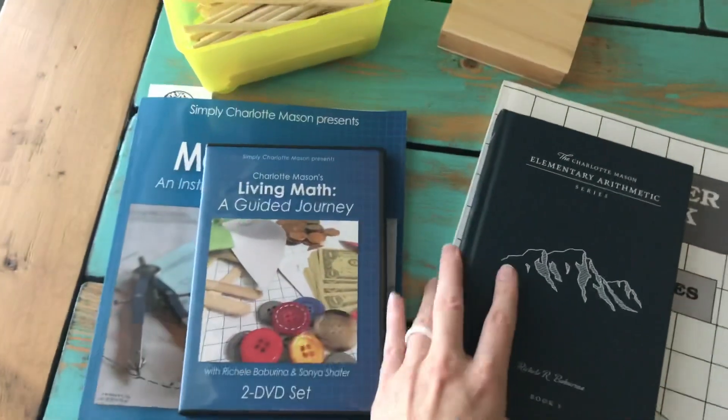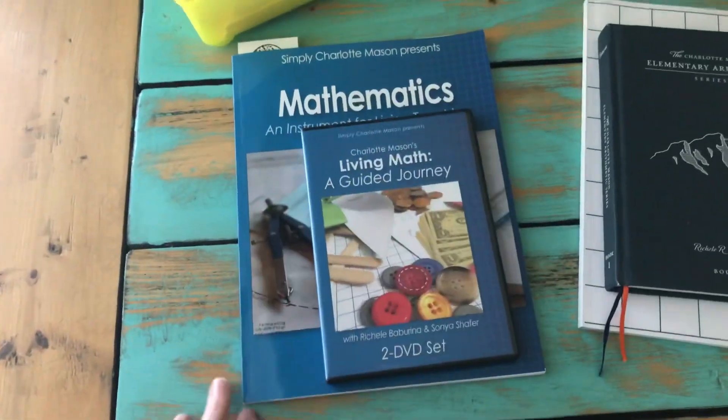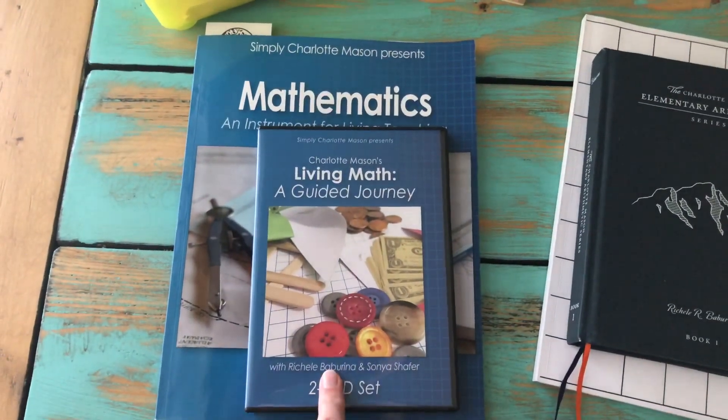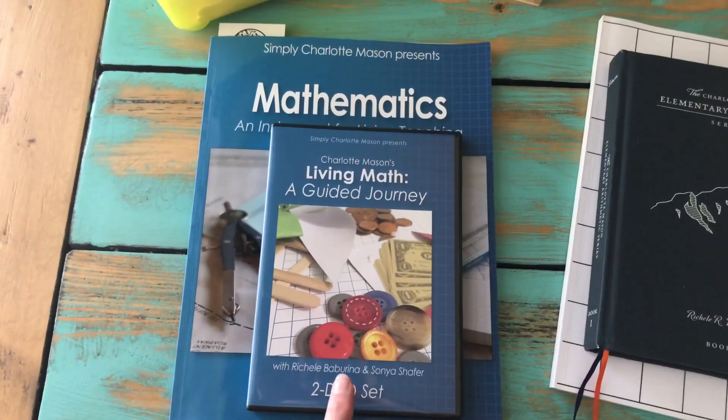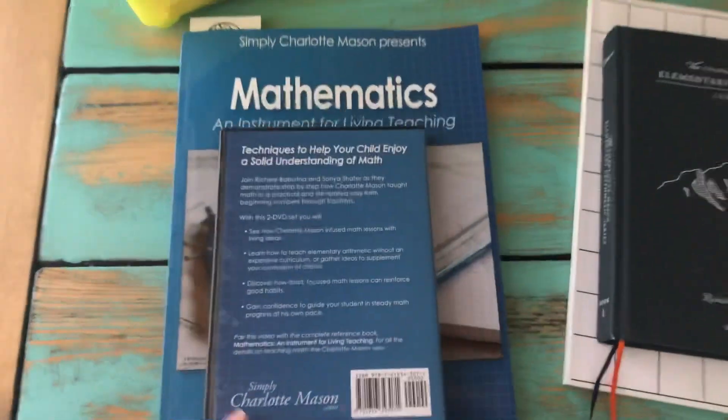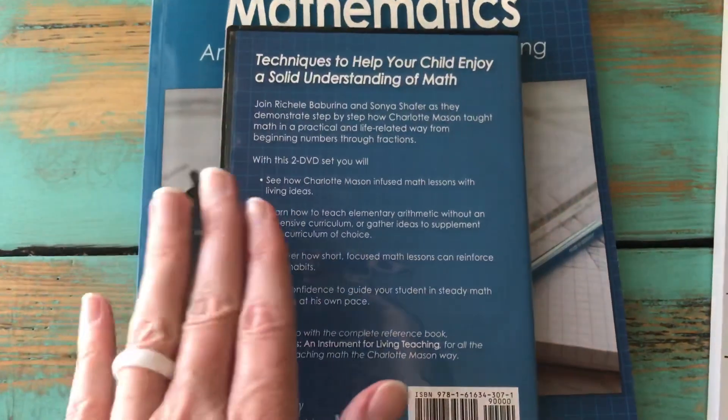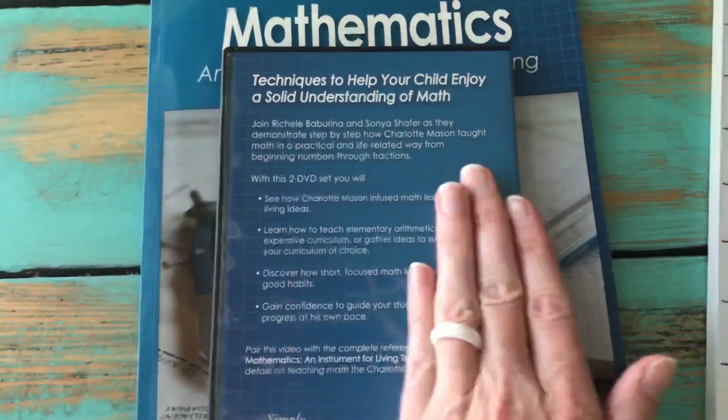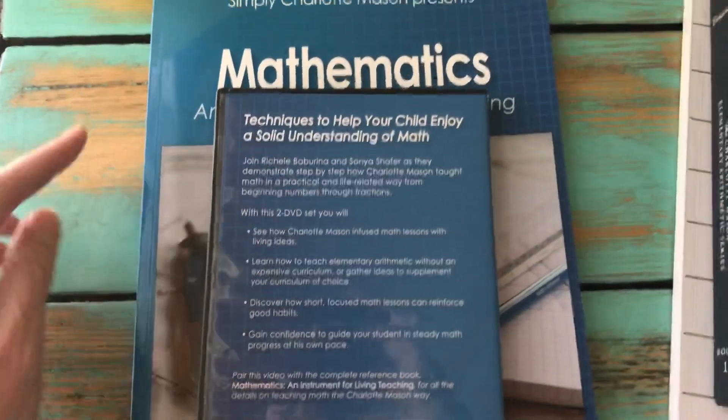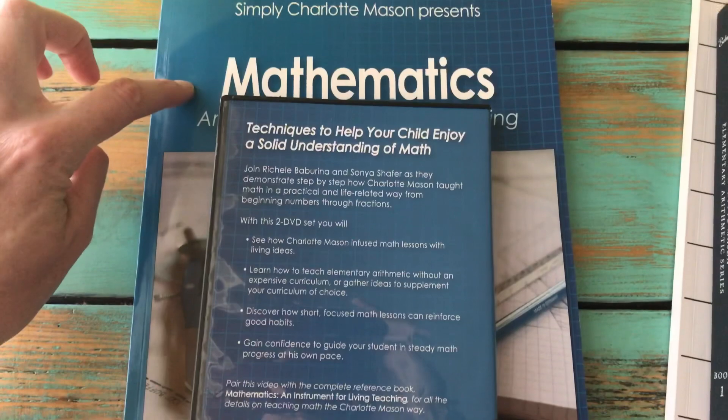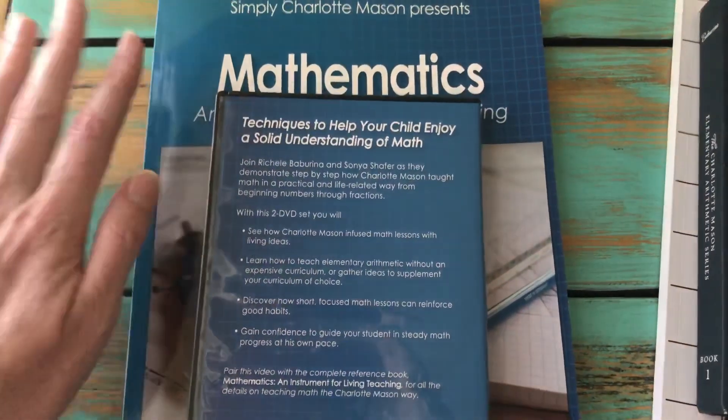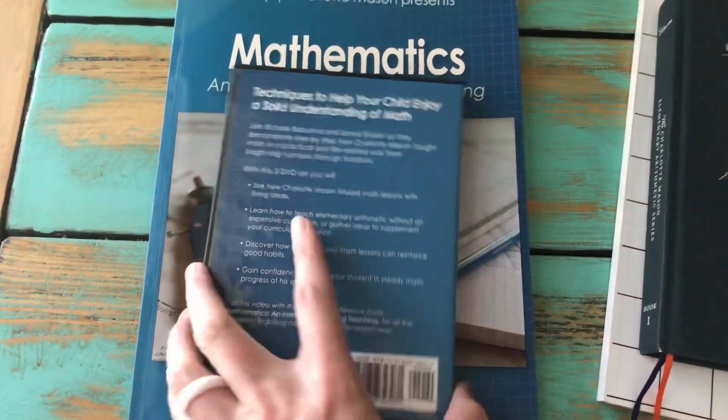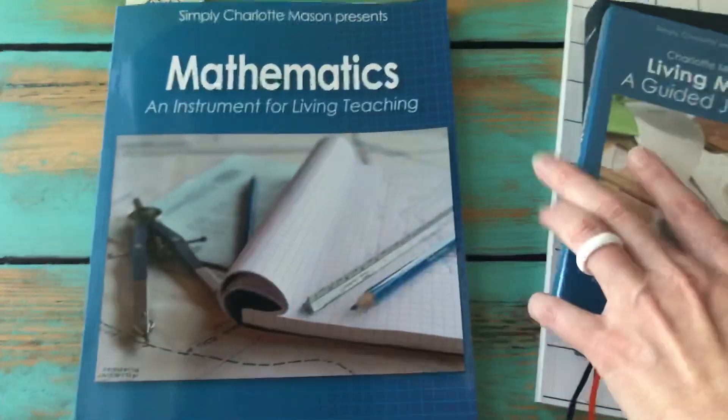This comes as a bundle right now for about $34.12 plus shipping, which is what I paid for it last year. This DVD is very helpful. You can see previews on the Simply Charlotte Mason YouTube channel. It's actually Rochelle and Sonia doing immersion lessons. This covers K through 12, both of these do.